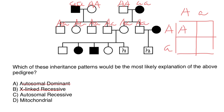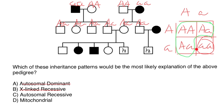Here is a simple Punnett square. Capital A and small a from each parent give us: one quarter small a, small a — affected — and three quarters normal phenotype. Here we see two children out of four are affected. Does it meet the requirements for autosomal recessive? Yes — it's not necessary that exactly 25% are affected. With large numbers, like thousands of such couples, the ratio approaches 25%, but with a small sample we may see great deviation from the ideal 75% to 25% ratio. So autosomal recessive can explain this pattern.